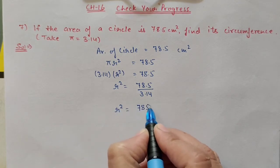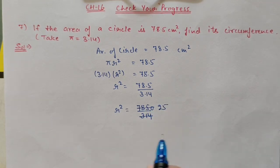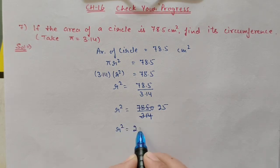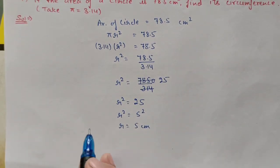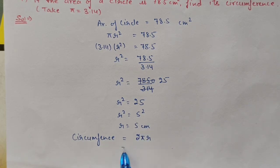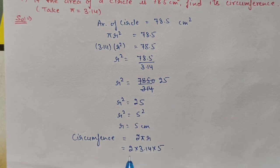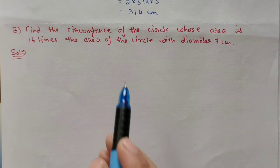r square equals 7850 by 314, which cancels to give 25. So r square equals 25, which is 5 square, meaning radius equals 5 centimeter. Now circumference equals 2 pi r — 2 into 3.14 into 5 — which gives 10 into 3.14, equal to 31.4 centimeter.